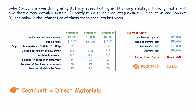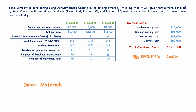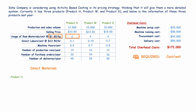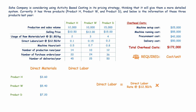The cost per unit equals direct materials plus direct labors plus overheads. For direct materials, each kilogram is $1.80, so we multiply this by the usage of each product. For product H, $1.80 times 2 kilograms gives us $3.60, and similarly for products W and D. For direct labor, the rate is $12.50 per hour. For product H, $12.50 times 0.1 hour gives us $1.25, and similarly for products W and D.